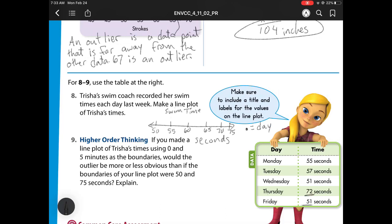So let's check. Monday, she swam 55. Tuesday, she swam 57. Wednesday, she swam 51. Thursday, she must have been sick or something because she swam 72. And then Friday, she swam 51 again. So we have two dots with that 51.